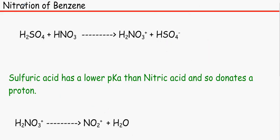So another thing that happens is that we nitrate benzene. So we have sulfuric acid and nitric acid to make HNO3 plus and HSO4 minus.